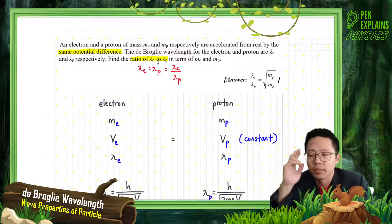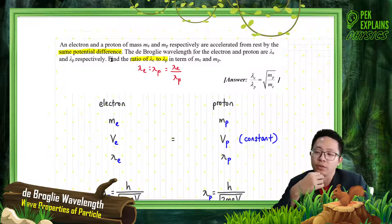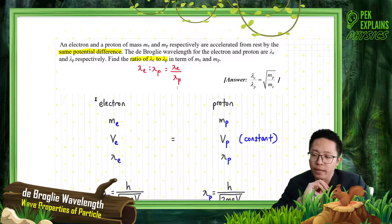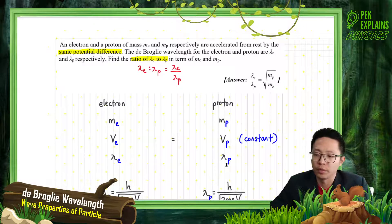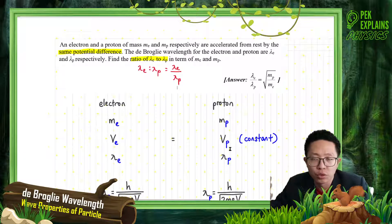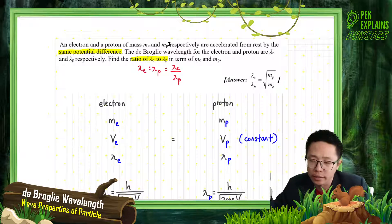So how to do this? From here we can see we have two conditions — one is electron, another one is proton. If you have two conditions like this and you want to do a comparison, you better make two columns: one for electron, one for proton. Make it two columns, then it's easy for you to build the equation. After we build the two columns for two conditions, we list down all the information provided in the question.